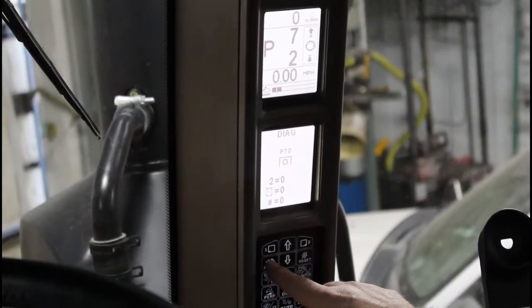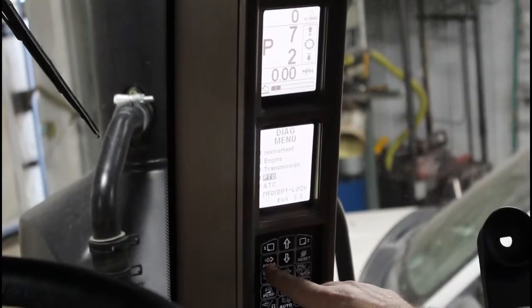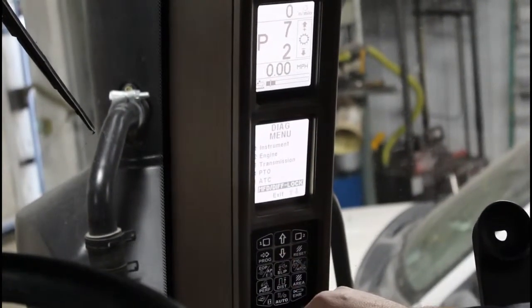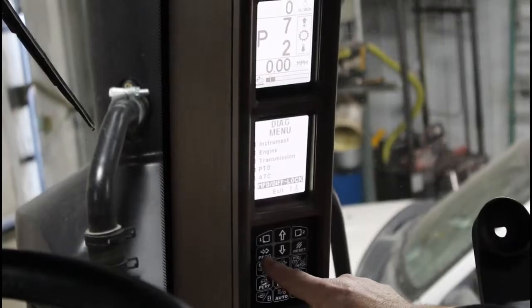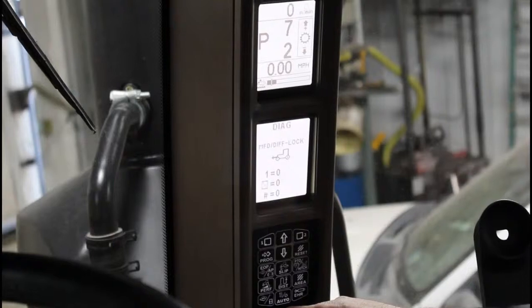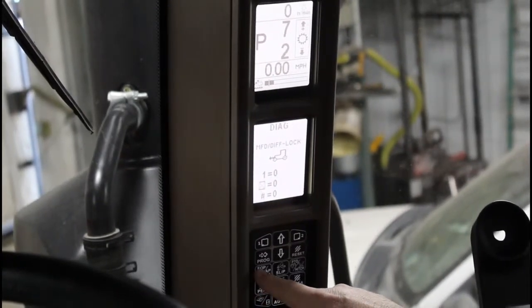By hitting the program button, that will exit out. We can then go to another section. This is the MFD and diff lock. Hit program again. As we can see, there are no fault codes in the MFD and diff lock.